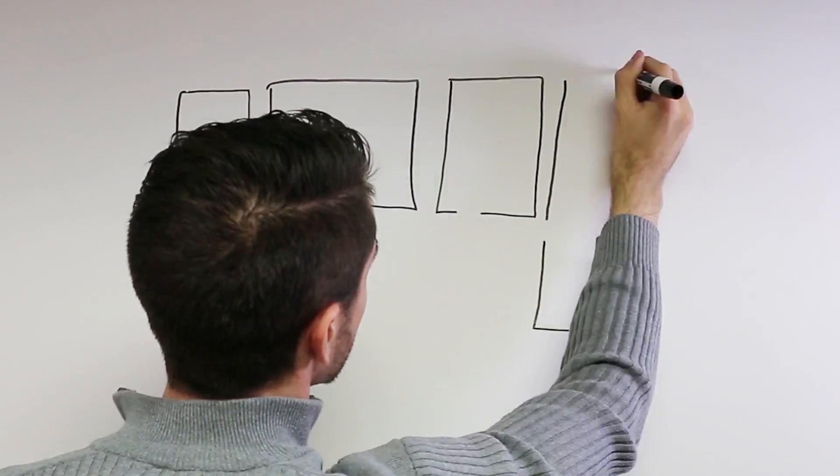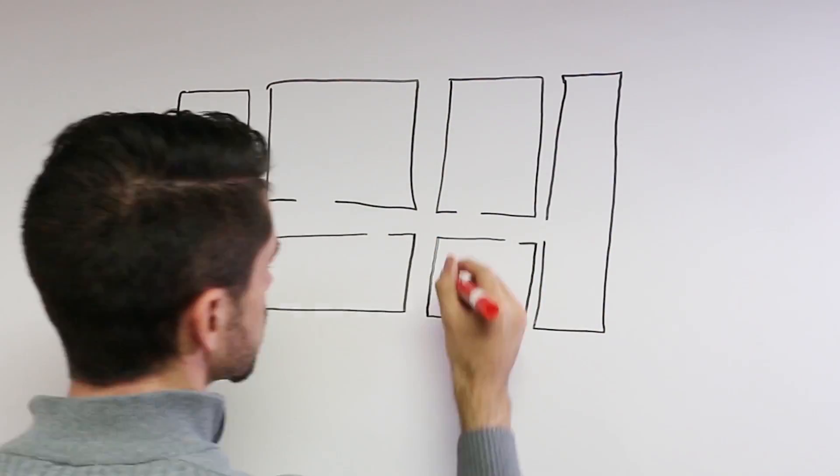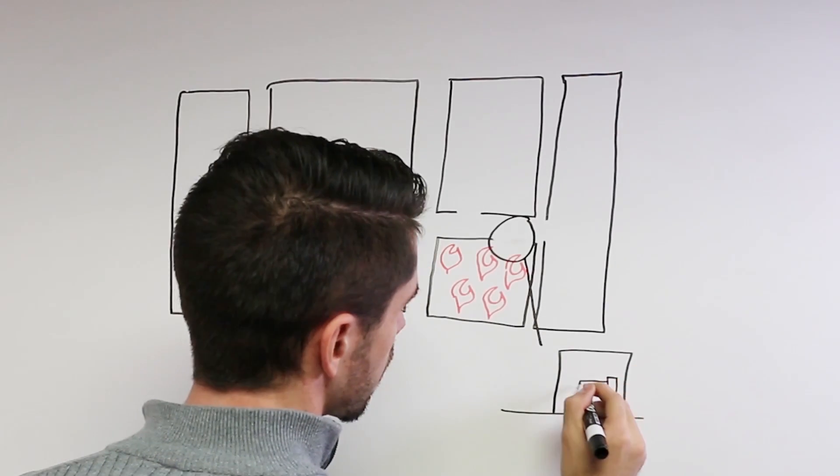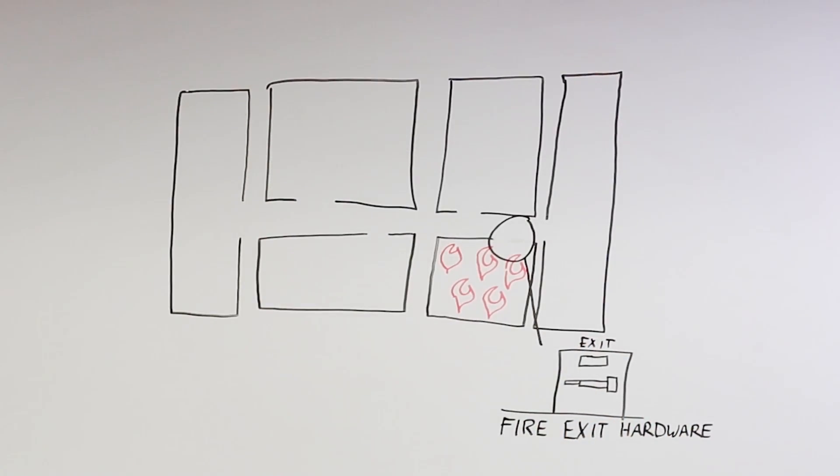If the codes require fire exit hardware instead of just regular panic hardware, it's because the codes are requiring the opening to be fire rated so that the opening slows the spread of smoke and or fire.